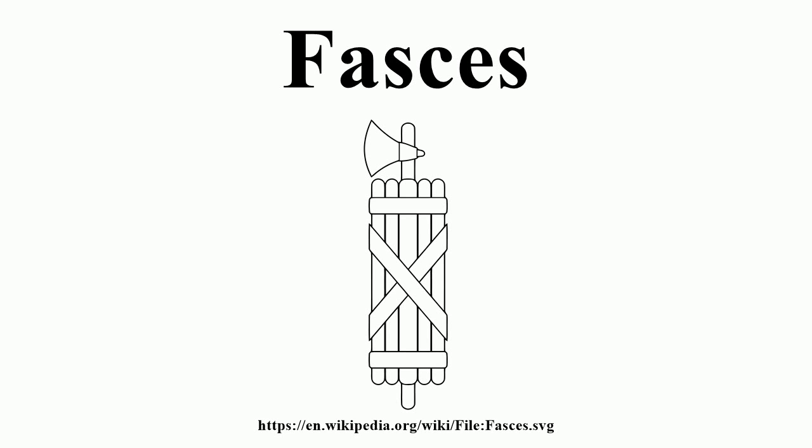Two Fassus appear on either side of the flag of the United States behind the podium in the United States House of Representatives. The official seal of the United States Senate has as one component a pair of crossed Fassus. Fassus ring the base of the Statue of Freedom atop the United States Capitol Building.